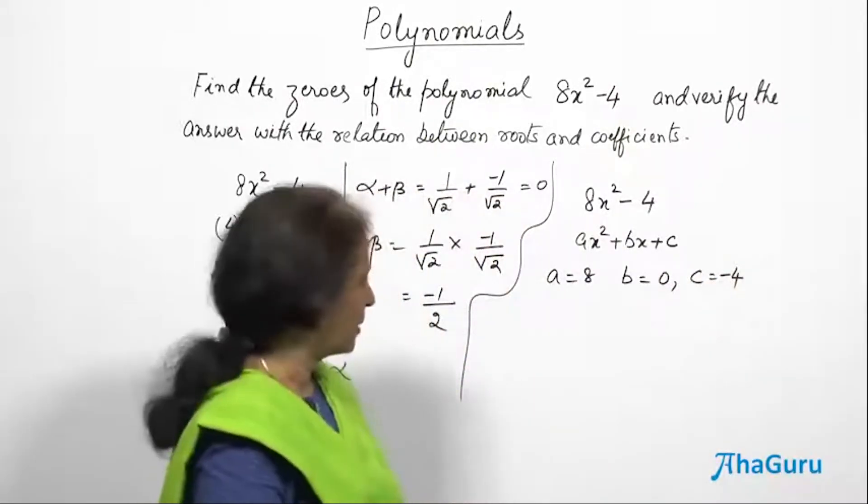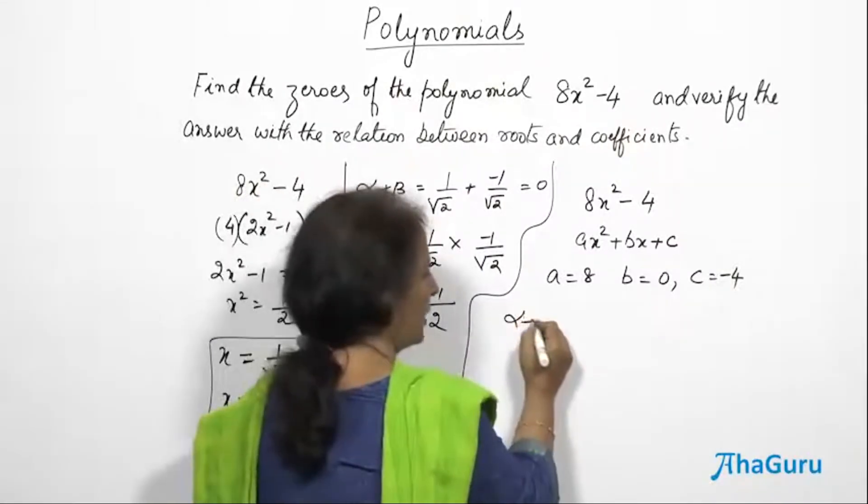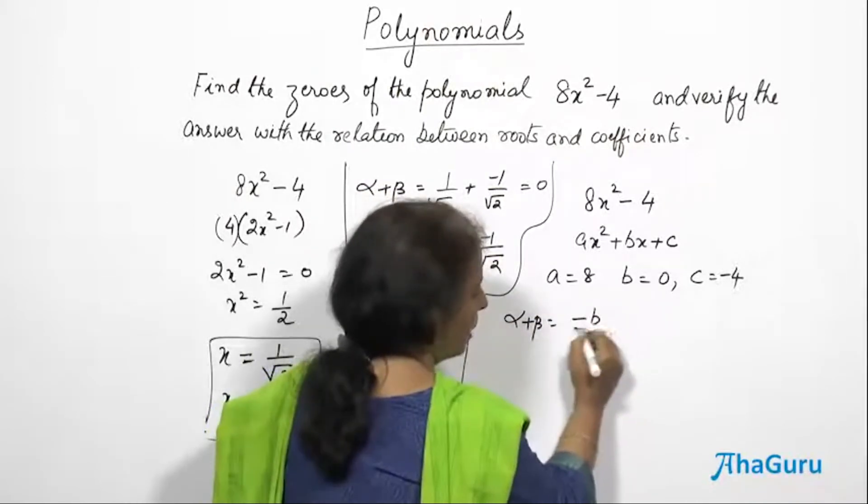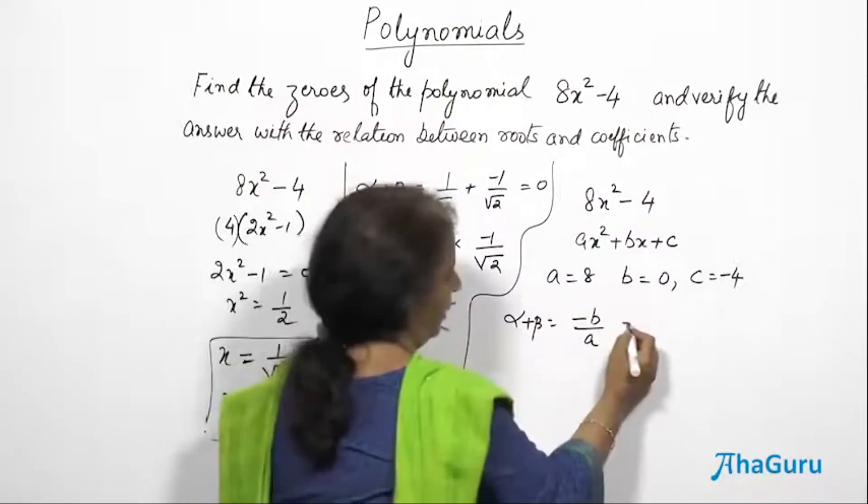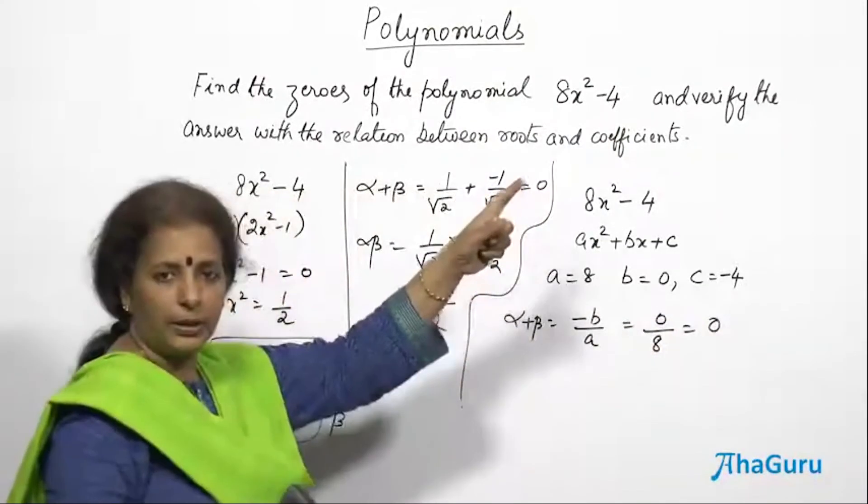Since I got a, b and c, what does the formula say? Alpha plus beta is equal to -b/a. But b itself is 0. So it can be written as 0/8, which is 0. So alpha plus beta is 0.